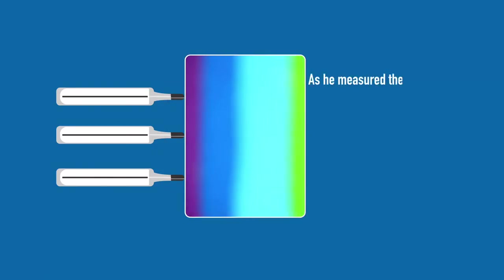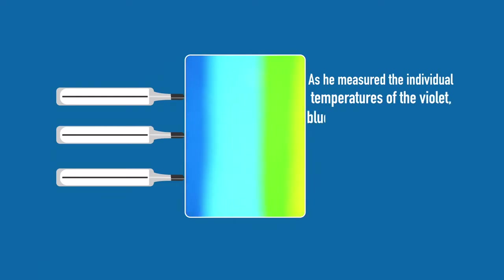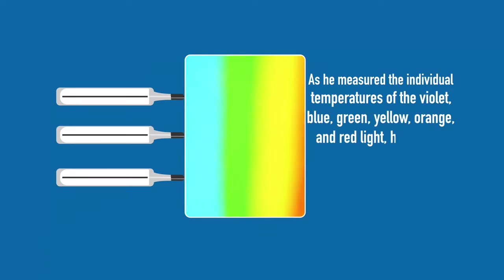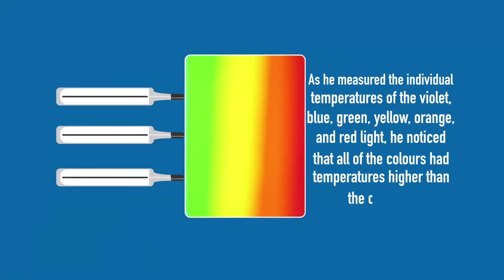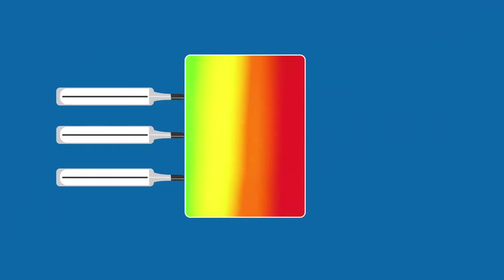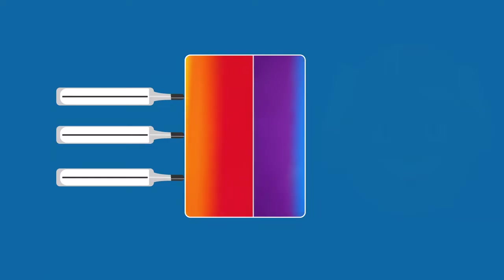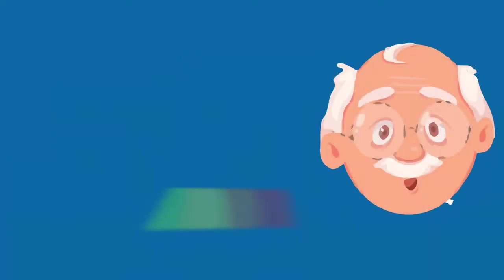Herschel used three thermometers with blackened bulbs for each color of the spectrum. As he measured the individual temperatures of the violet, blue, green, yellow, orange, and red light, he noticed that all of the colors had temperatures higher than the controls. Moreover, he found that the temperatures of the colors increased from the violet to the red part of the spectrum.